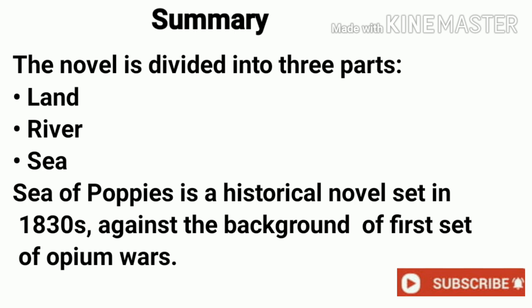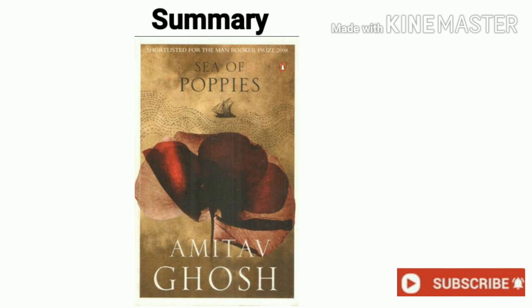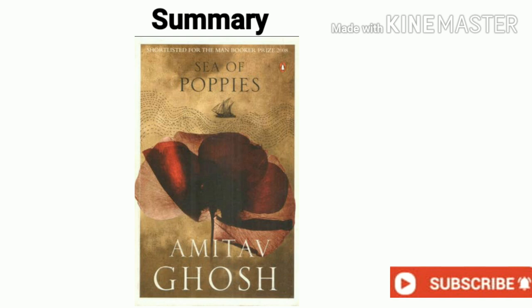Sea of Poppies is a historical novel set in the 1830s against the background of the first Opium War. British fortune seekers in India amassed fabulous wealth that sustained colonial rule by turning the banks of the Ganga into a sea of poppies to grow opium and export it illegally to China. The trade was monopolized by British merchants under the seal of the Company. Peasant farmers of Bihar and parts of Bengal were forced to turn over their fertile agricultural lands to the Company's agents for opium production, causing widespread poverty and hunger.